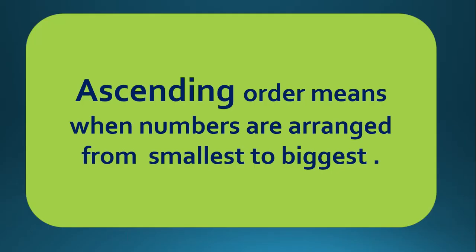Ascending order means when numbers are arranged from smallest to biggest. We can also arrange numbers in ascending order. So let's start and arrange the numbers in ascending order. Ascending means smallest to biggest.